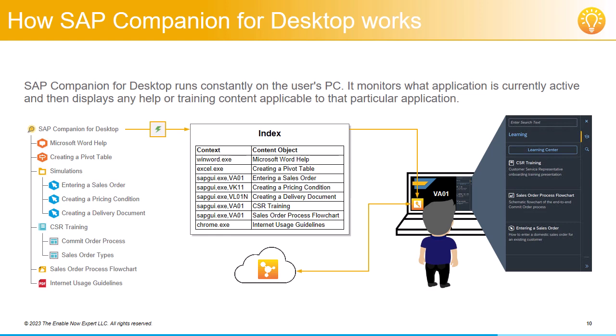It's worth emphasizing a couple of security-related things here. First, information about what the user is running on their PC stays on the PC — it's not passed to SAP EnableNow, so there's no logging or surreptitious snooping of any kind. In fact, only the current context is ever stored, and then only in memory. There's no log of previous things the user's done, and nothing's retained once the user closes SAP Companion. The only communication between the user's PC and SAP EnableNow is a request to return certain specific content objects to display on the user's screen. That's all.